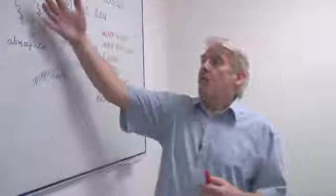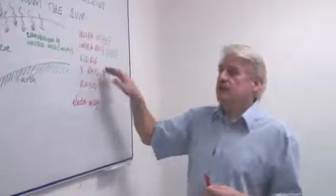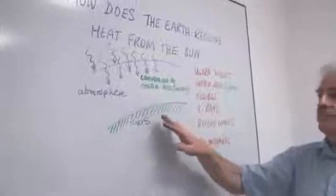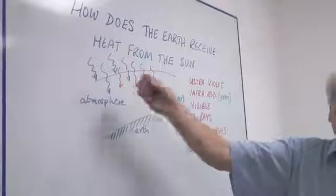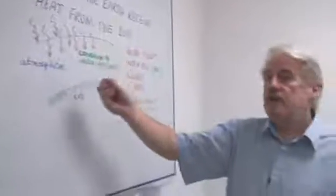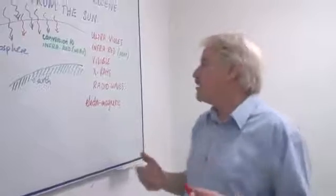So, when the x-rays, for example, come from the sun, most of them don't get to us here on earth because they're absorbed in the upper layers of the atmosphere and are converted to other forms of radiation, particularly infrared, which means that the earth warms up.